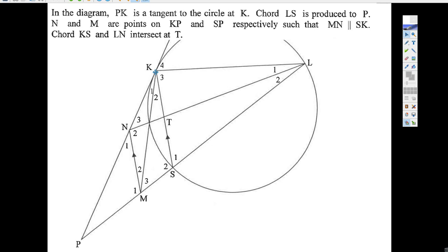PK is a tangent, and the chord LS is produced to P. We got that. N and M are points on KP. N and M are points, okay, on KP and SP respectively, such that MN and SK, those two lines are parallel. Chord KS and LN intersect at T.